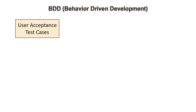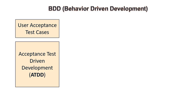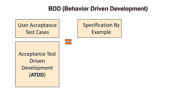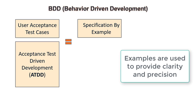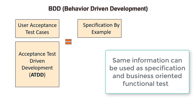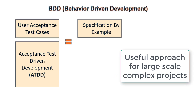These acceptance criteria will later lead to acceptance test cases. Hence it is also known as acceptance test-driven development. Sometimes the requirements are captured in the form of realistic examples instead of abstract statements. These examples are used to provide clarity and precision so that the same information can be used as specification and business-oriented functional tests. This approach is very useful for large-scale complex projects.